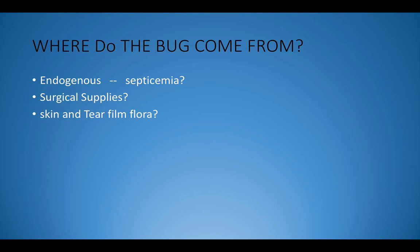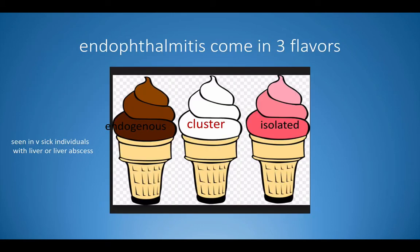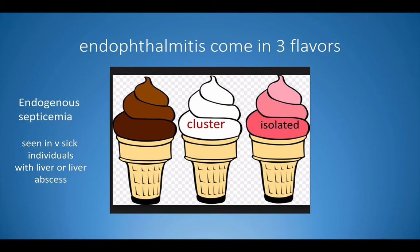So where does the bacteria come from? Is it bloodborne as in following septicemia? Is it coming from infected surgical supply — one infected batch of BSS where all patients using that batch get infection? Or is it a rare event because of contamination from bacteria, which is normal common flora of the eyelid, skin and the tear film? Endogenous endophthalmitis is usually seen in very sick individuals in major multi-speciality hospitals.